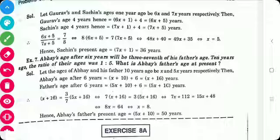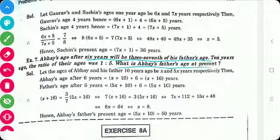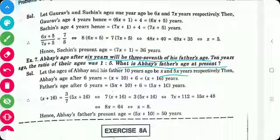The next problem: Abhay's age after 6 years will be 3/7th of his father's age. 10 years ago, the ratio of their ages was 1 to 5. What is Abhay's father's age at present? Let Abhay's age 10 years ago be x and his father's age be 5x, since the ratio is 1 to 5.